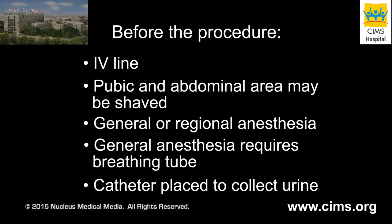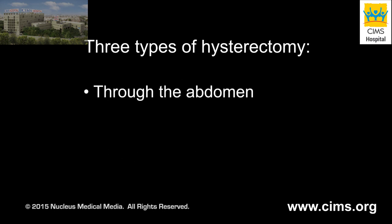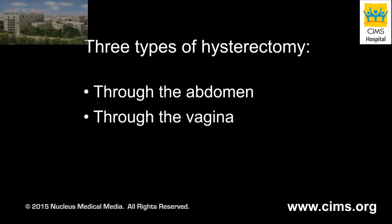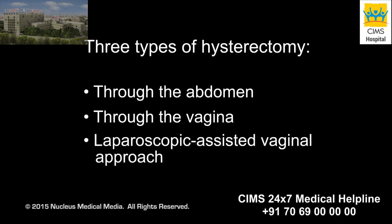A hysterectomy takes about one to three hours. There are three main ways to perform this surgery: through the abdomen, through the vagina, or using a laparoscope to assist a vaginal approach.